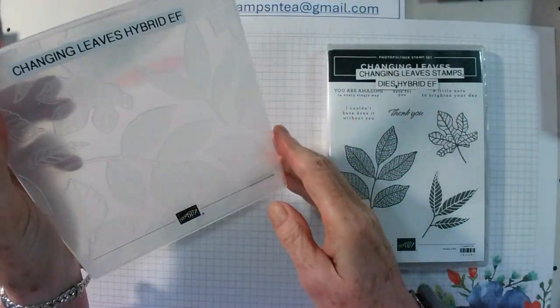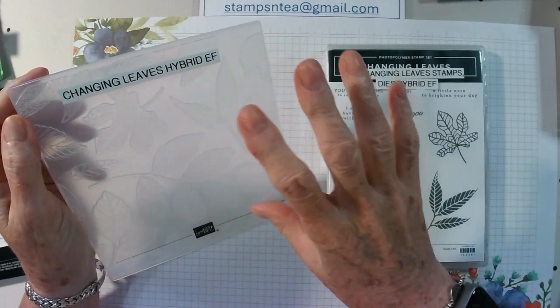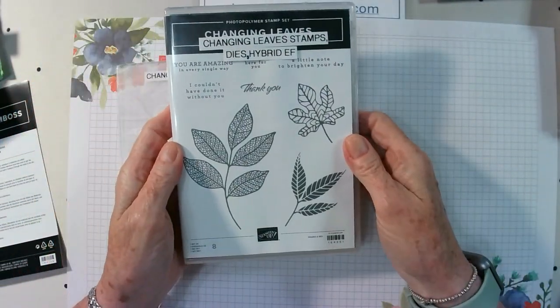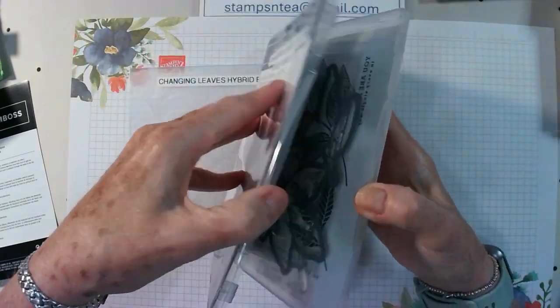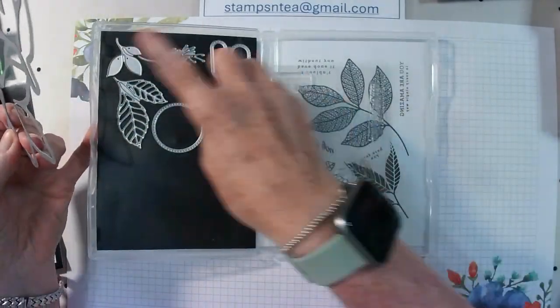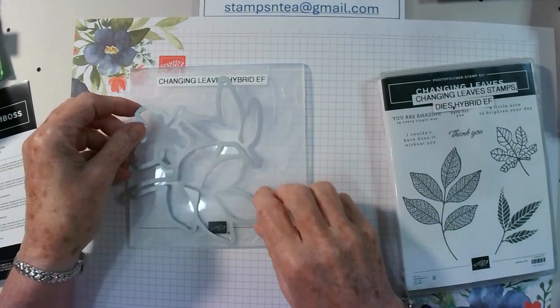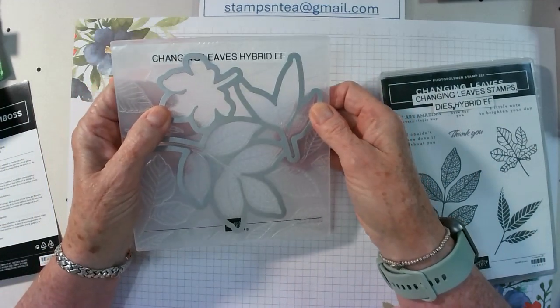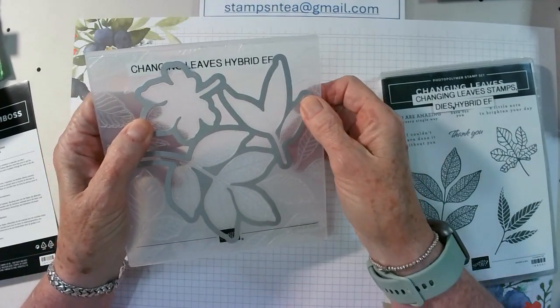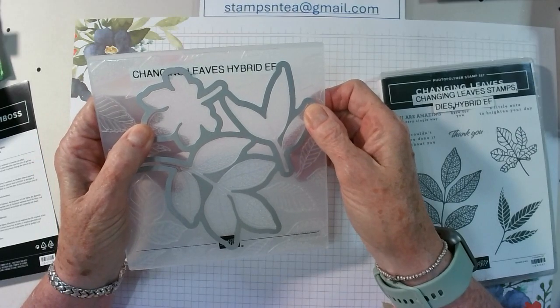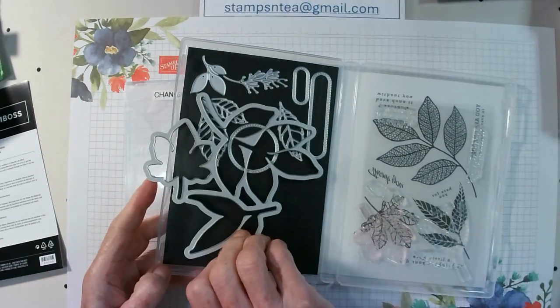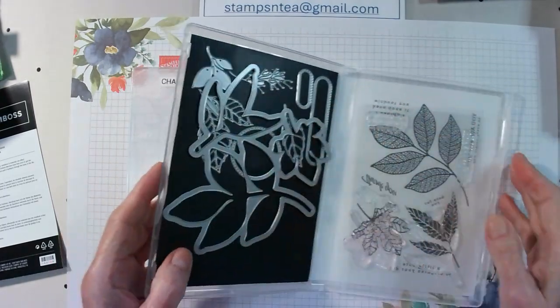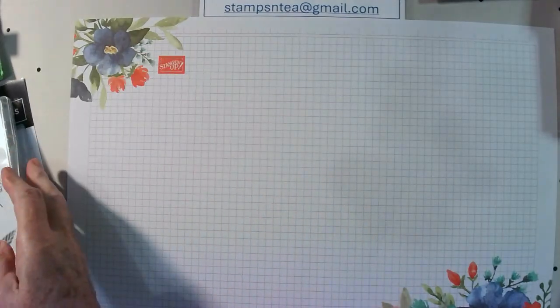As you can see I've already got a piece of paper over my mat that I work on and that's because I'm going to spread some color today and I want to just protect the top of the desk. So the Changing Leaves Suite: stamps, dies and a hybrid embossing folder. This embossing folder is beautiful. It's got huge leaves and some smaller leaves, really nice assortment of leaves. These are the leaves that are on the embossing folder. This is the stamp set so you can stamp them and cut them out or you can stamp them and emboss them. The dies, you have one large die and you've got several smaller dies but this large die will overlay the embossing folder and it will cut out those leaves after they are embossed if that's the look you're going for.